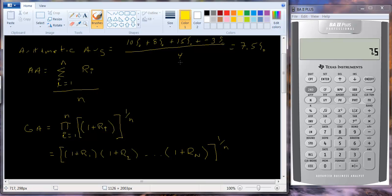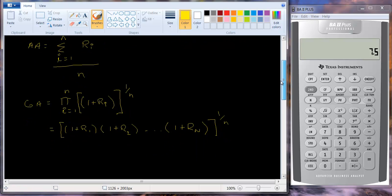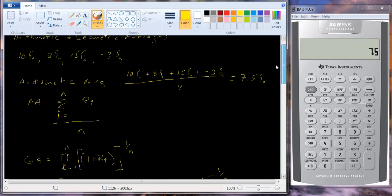Here we divided by 4 because we added everything together. Here we're multiplying together. So we're going to take the nth root of the numbers. So let's look at our numbers here.